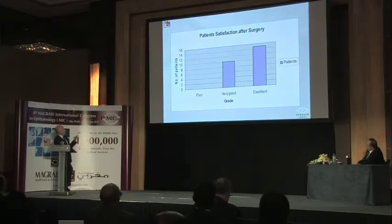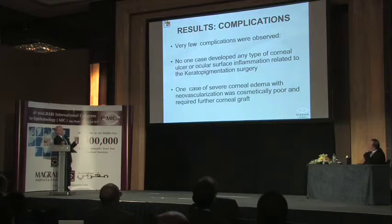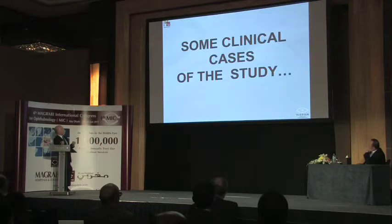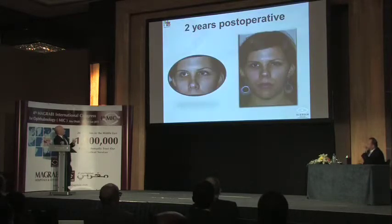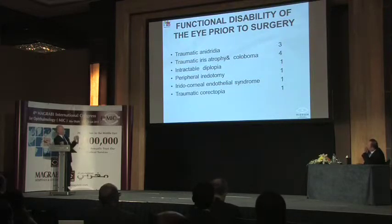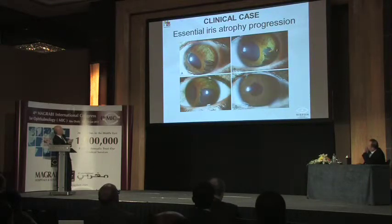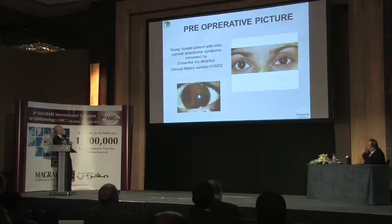Complications were minimal — no cases of significant superficial ulceration. One case of severe corneal deep vascularization was related to one of the initial pigments, a lesson quickly learned. Regarding functional cases — patients with normal vision but severe functional disability due to photic phenomena, polycoria, or intractable glare — in one progressive iridocorneal endothelial atrophy case, improvement was remarkable at six months and one year. After treatment, the patient was totally stable and symptoms completely disappeared.